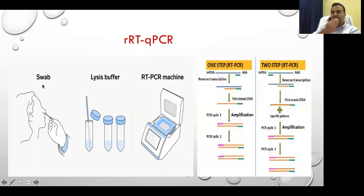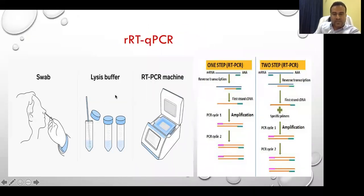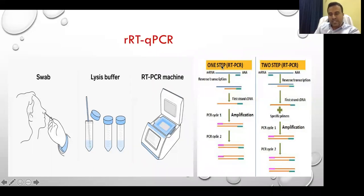The swab is collected either from the nose, throat, or from the ventilator fluid. It is then lysed with a buffer to extract the messenger RNA of the virus, which is fed into an RT-PCR machine. There are one-step and two-step RT-PCR methods. In one-step, from the same tube, dNTPs and all necessary reagents are added to augment cDNA production. In two-step, specific primers are added for amplification.